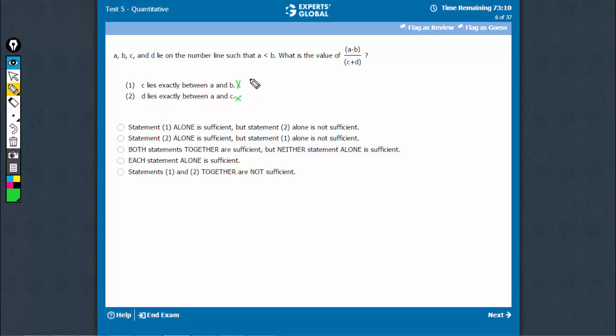This doesn't talk about B, so this cannot be sufficient. Combining, we know B is greater than A. It's best to assume values.